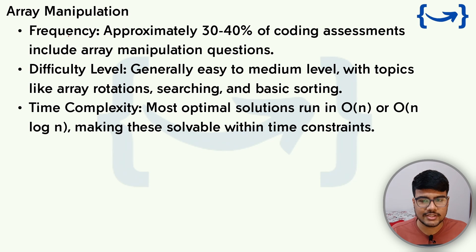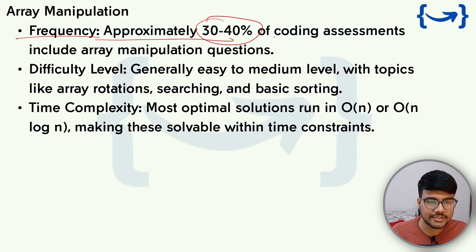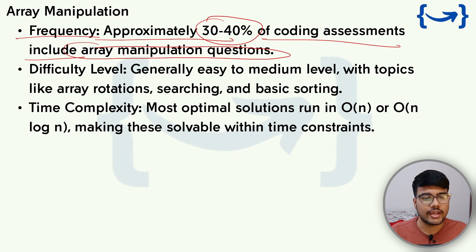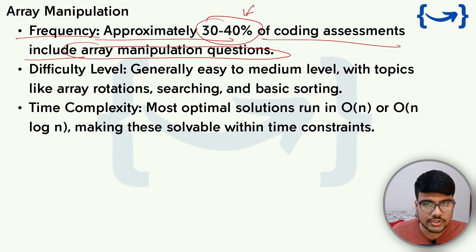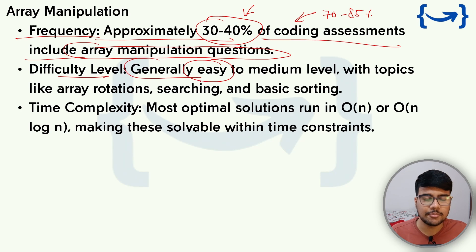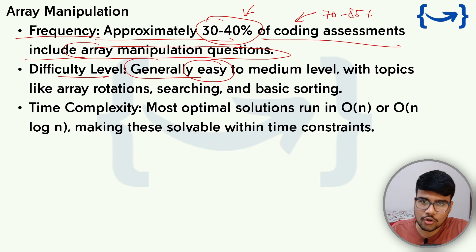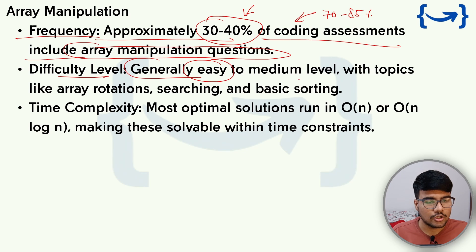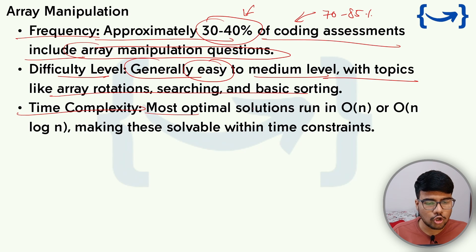Questions to expect include: rotated array, reversed array, first and last occurrence, finding missing numbers, unique elements, maximum permutation value, second largest, second minimum, and largest and second largest number. Array manipulation questions appear in approximately 30 to 40 percent of coding assessments overall — but looking at current trends, I would say 70 to 85 percent of the time they ask array manipulation in online assessments. Difficulty is generally easy to medium, with optimal solutions running in O(n) or O(n log n).